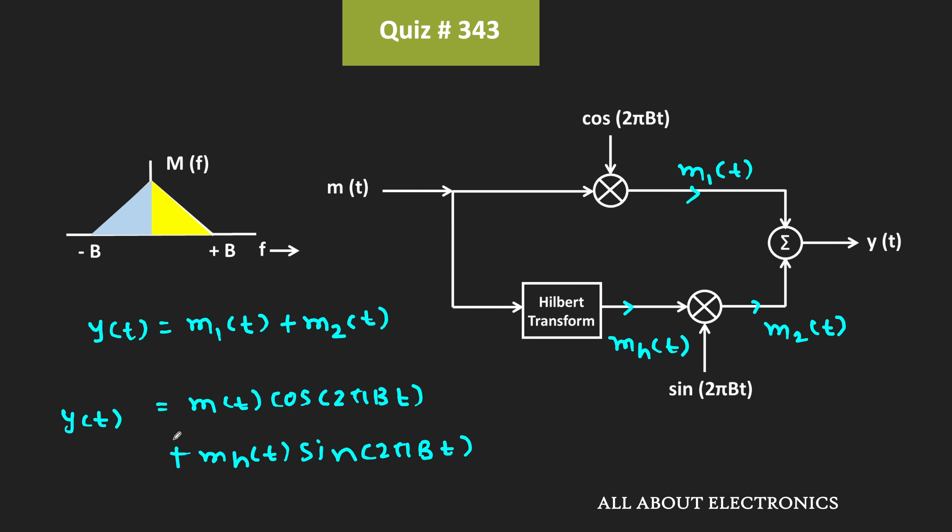So instead of this positive sign, suppose there is a negative sign, then it is the case of the upper sideband suppressed carrier. And in this case, this carrier frequency is equal to B.